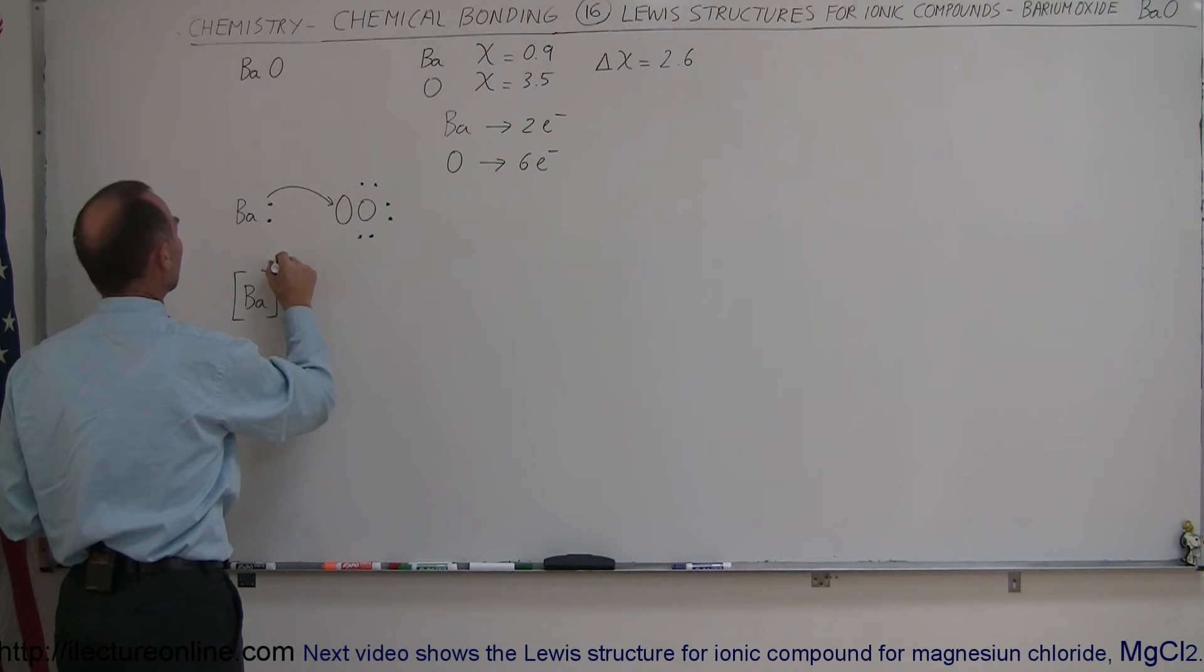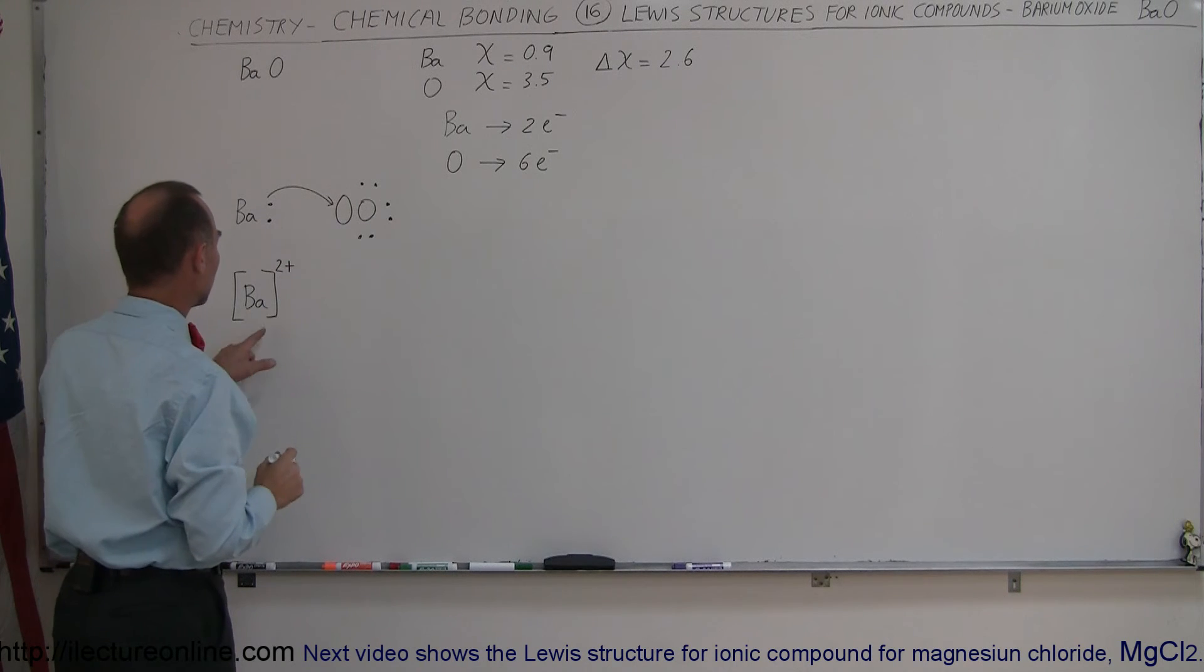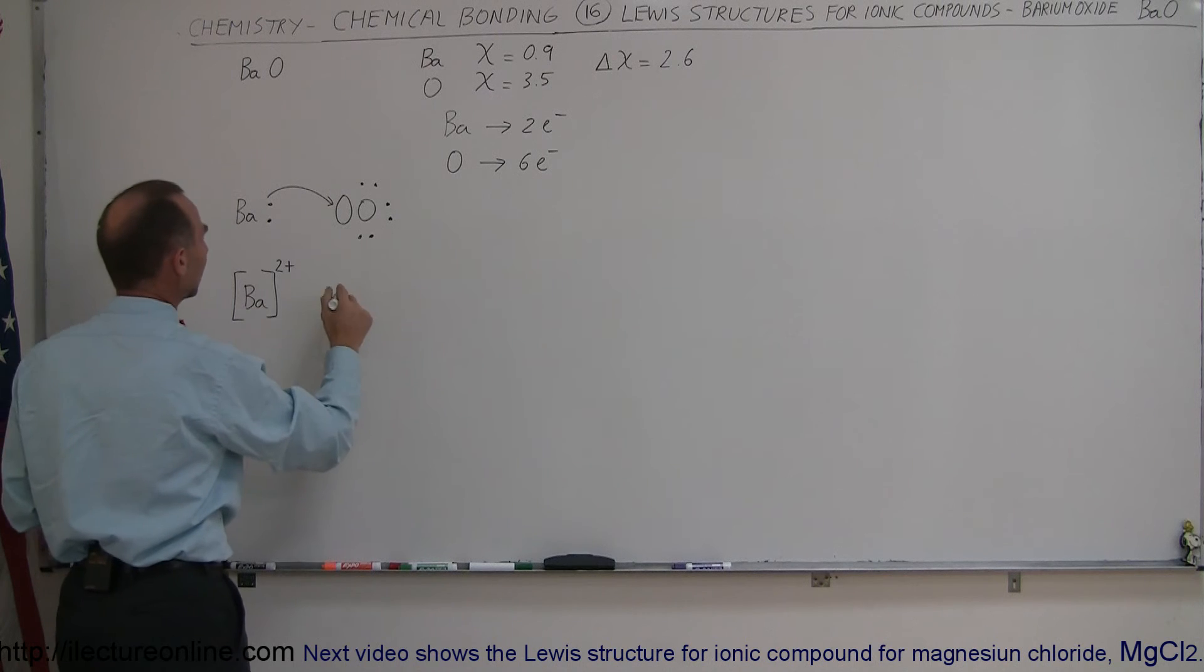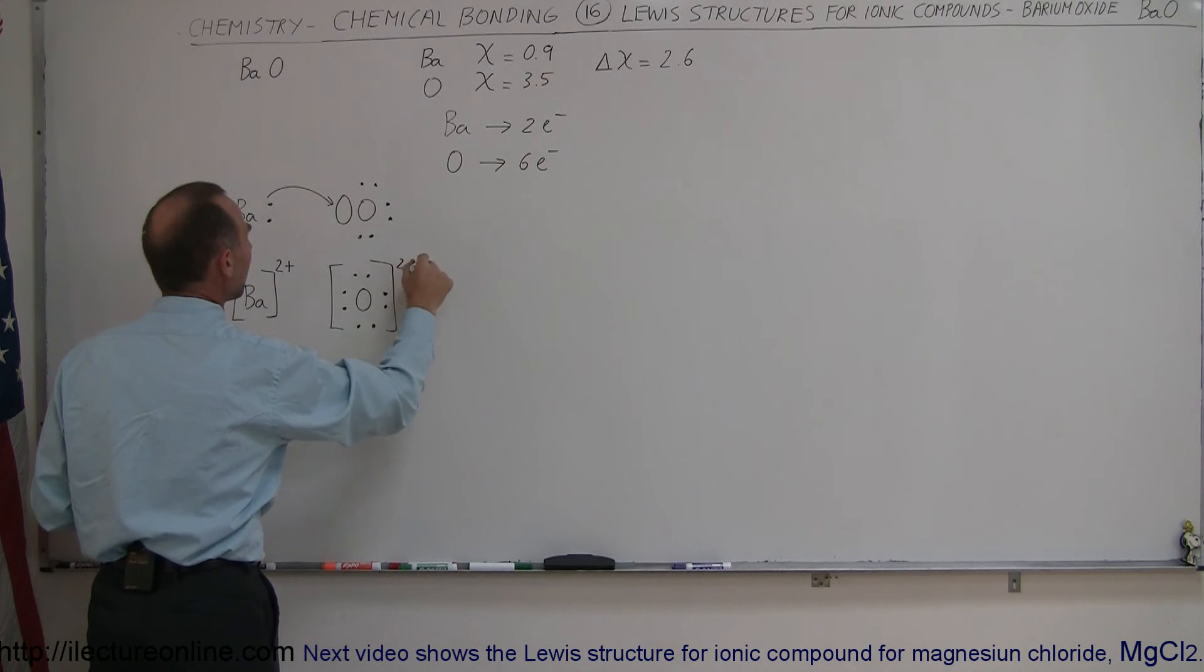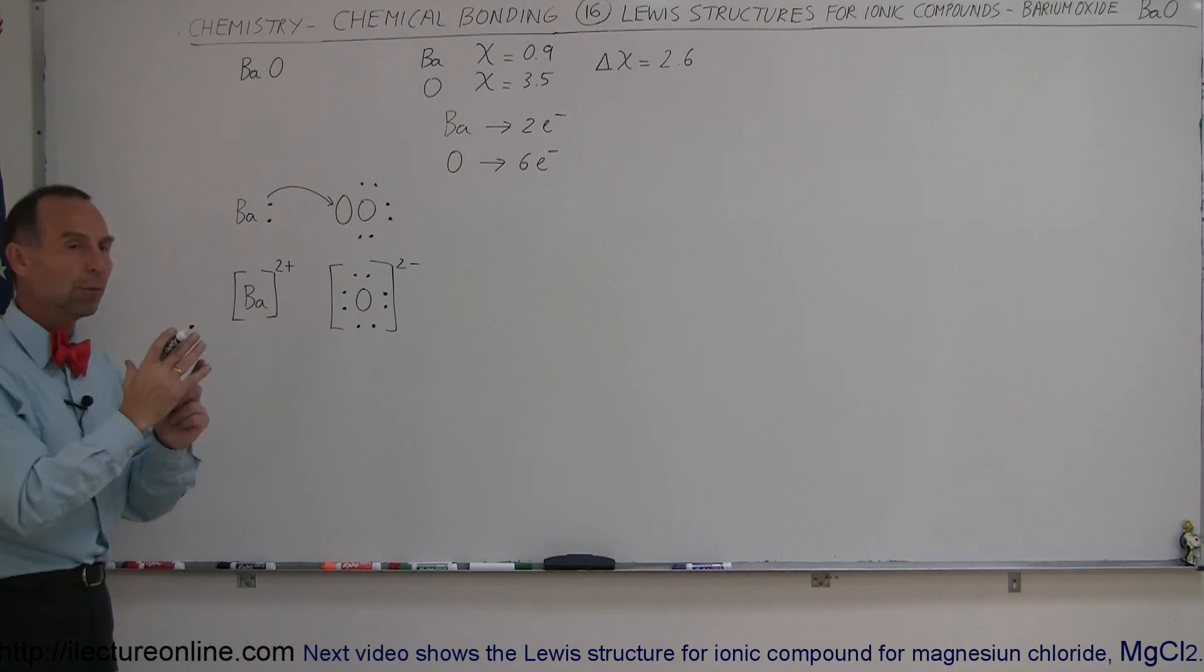Oxygen now will have a full set of valence electrons in the outer shell, and that means two more than it started with. So this is now going to be a 2- ion, and then they form a bond together.